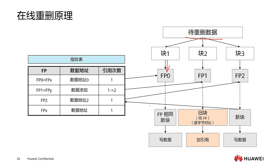We check whether the fingerprints are consistent. If the comparison results are not the same, that indicates the data just written in is a new block. If the fingerprints are the same, then the storage system will continue to compare byte by byte. If the byte-by-byte comparison results are the same, it indicates that it is an old block. If different, it means it's a new block.